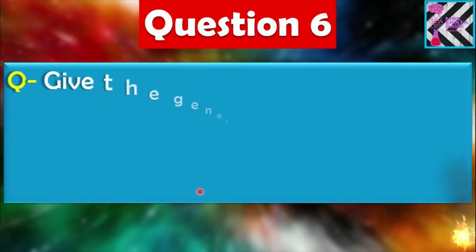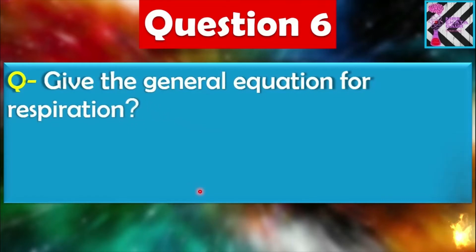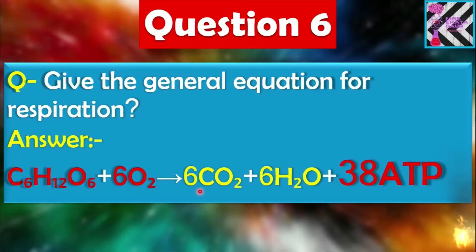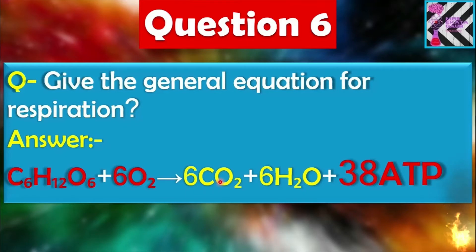Question number six: Give the general equation for respiration. Remember this equation very well: C6H12O6 plus 6O2 gives 6CO2 plus 6H2O and 38 ATP. From one glucose molecule you get 38 ATP energy.